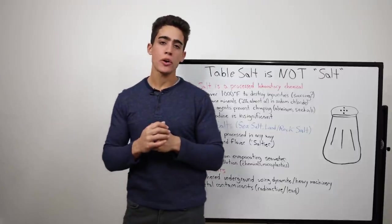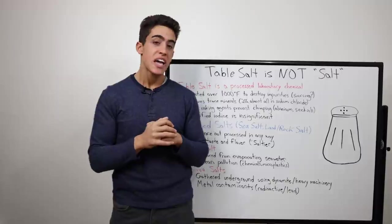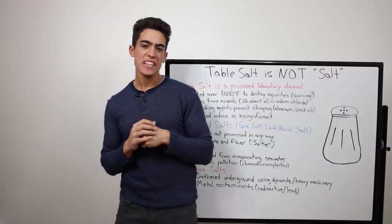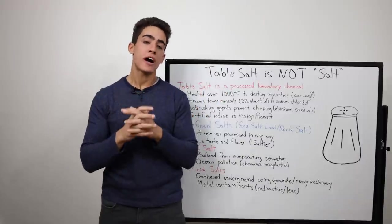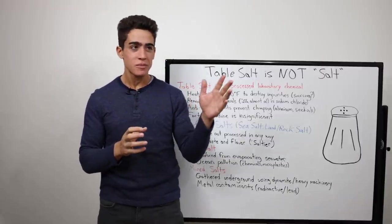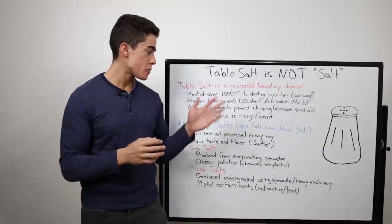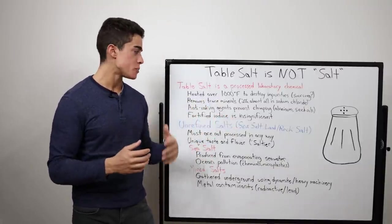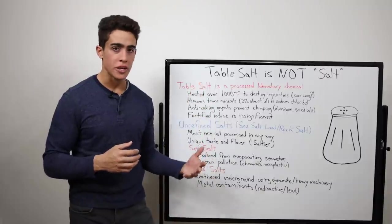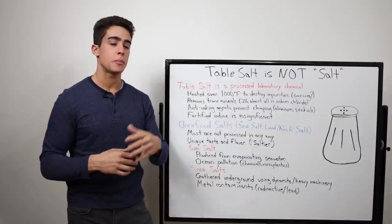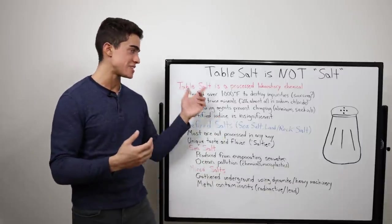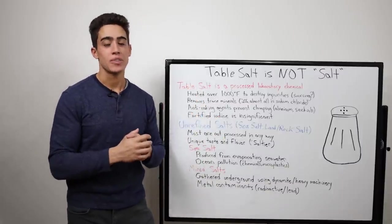And you'll see people argue that you should consume table salt because they fortify it with iodine and everyone's iodine deficient. But the amount of iodine in table salt isn't really significant. It might prevent goiter or severe iodine deficiencies, but to keep up with the fluoride and the chlorine, the bromide, all of these halogens they dump in the water supply, and to actually achieve optimal thyroid function, table salt is not going to do that.